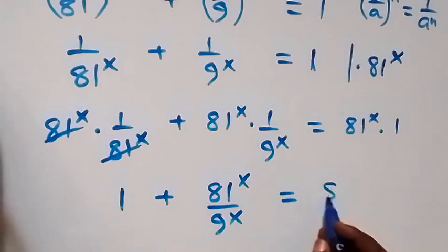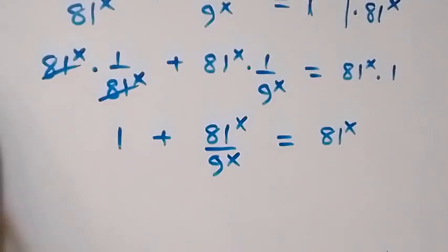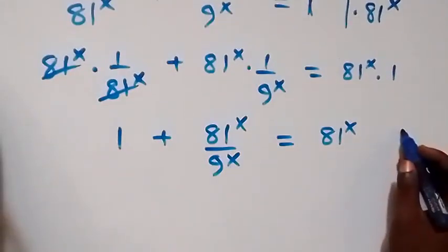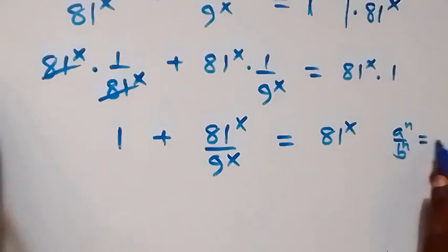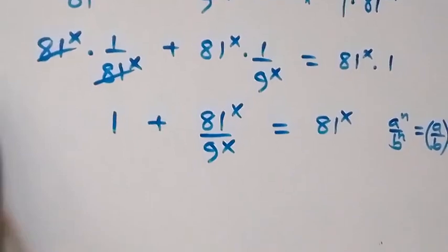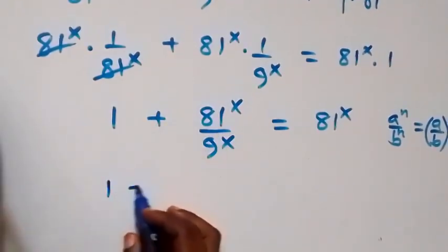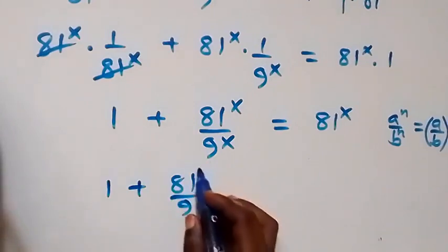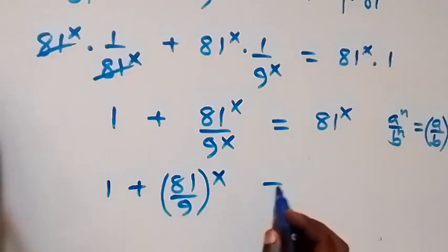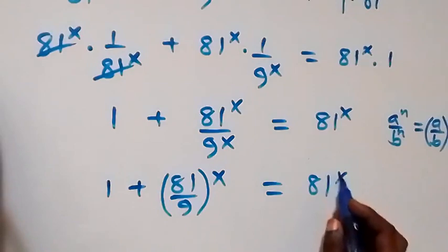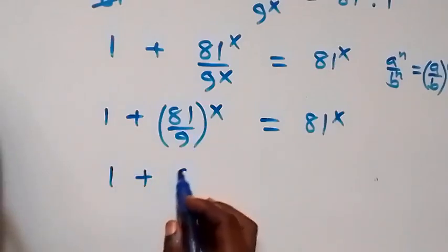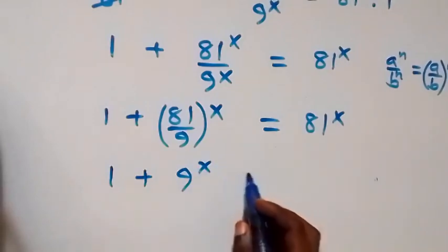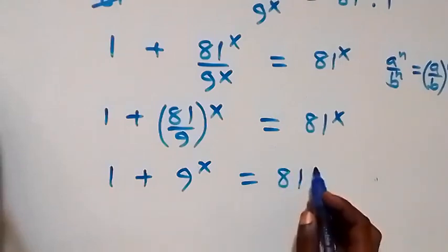From the law of indices, a raised to power n over b raised to power n can be written as a over b raised to power n. So since we have the same power, this becomes 1 plus 81 over 9 raised to power x, equals 81 raised to power x. And 81 over 9 is 9, so we have 1 plus 9 raised to power x equals 81 raised to power x.